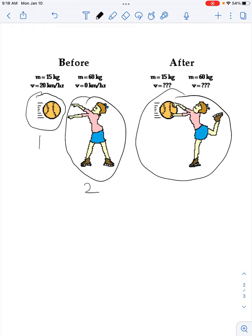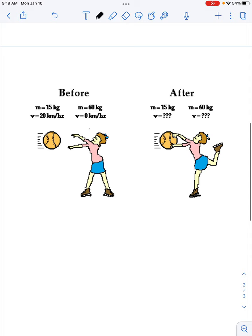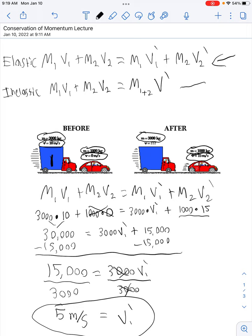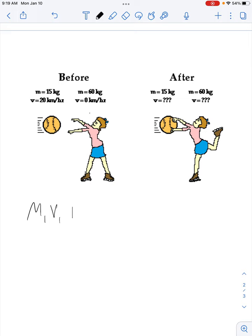Okay, so after the collision, if they're moving together, that means it's an inelastic collision. Inelastic means after things collide, they stick together. So we're going to use the inelastic equation, which you can see right here. So I'm going to rewrite it down here, which is M1 V1 plus M2 V2 equals M1 plus M2 V prime.